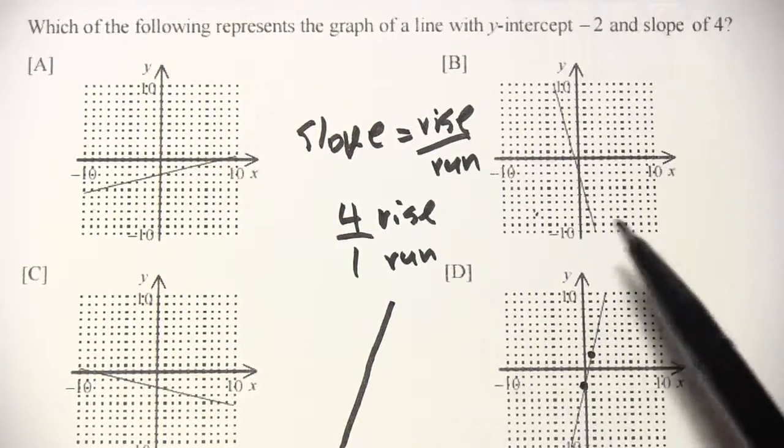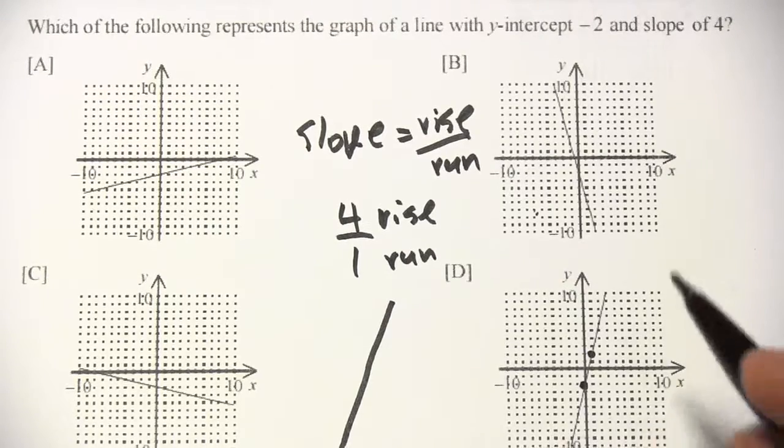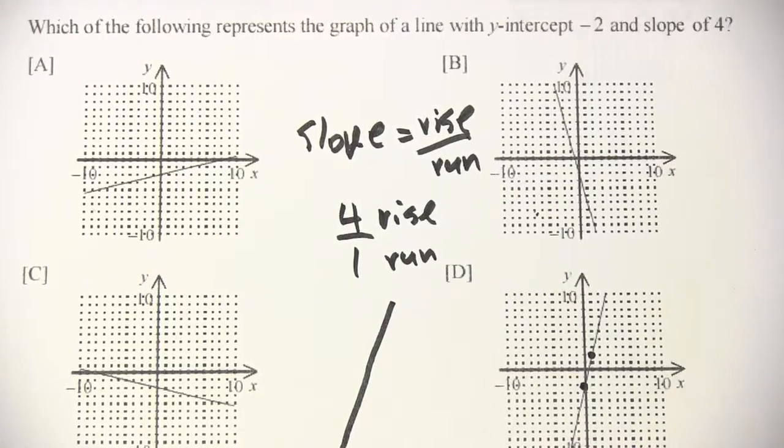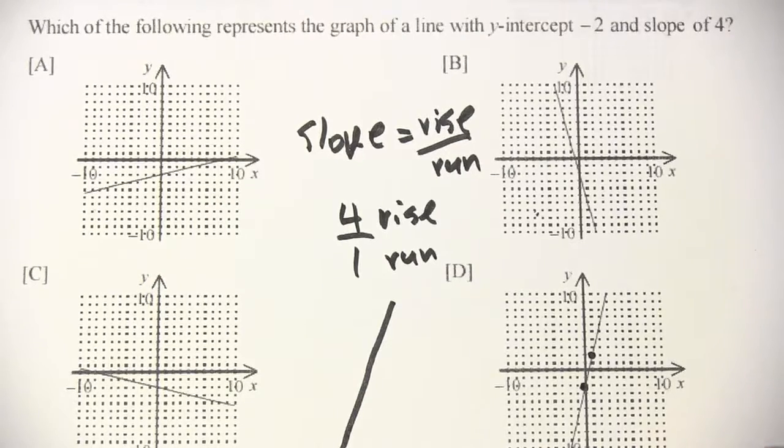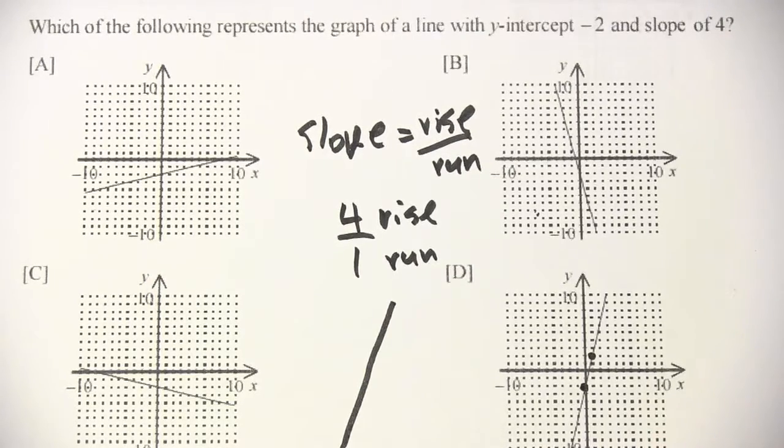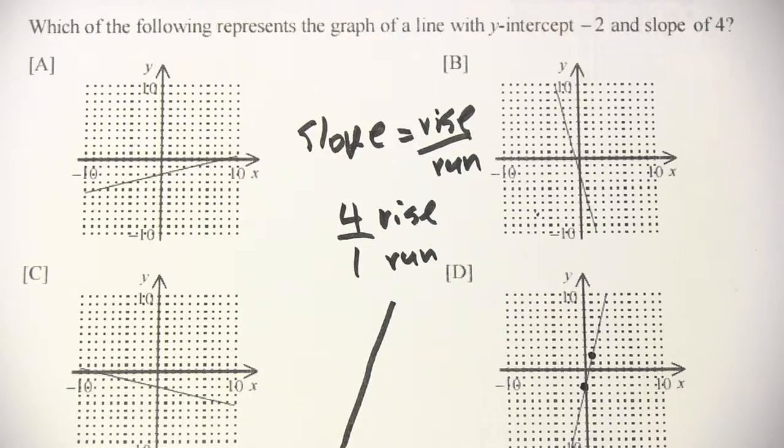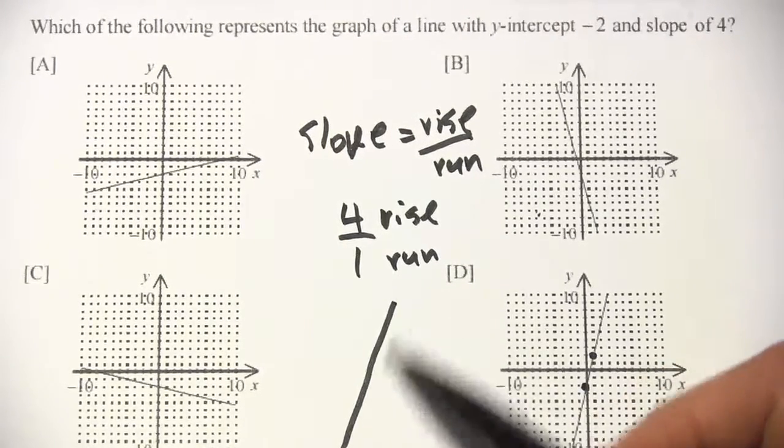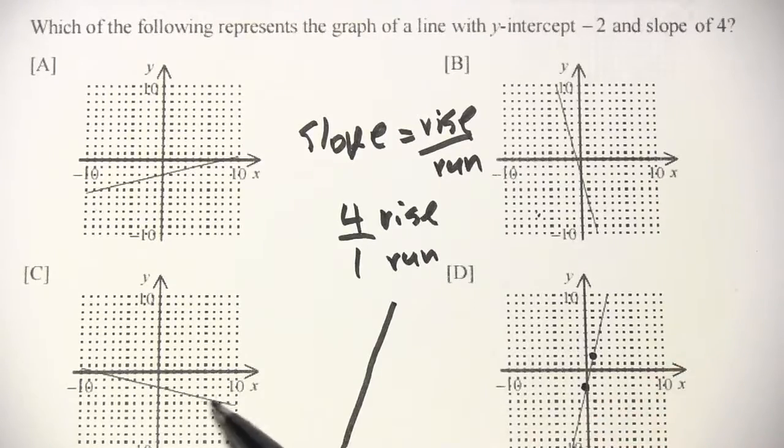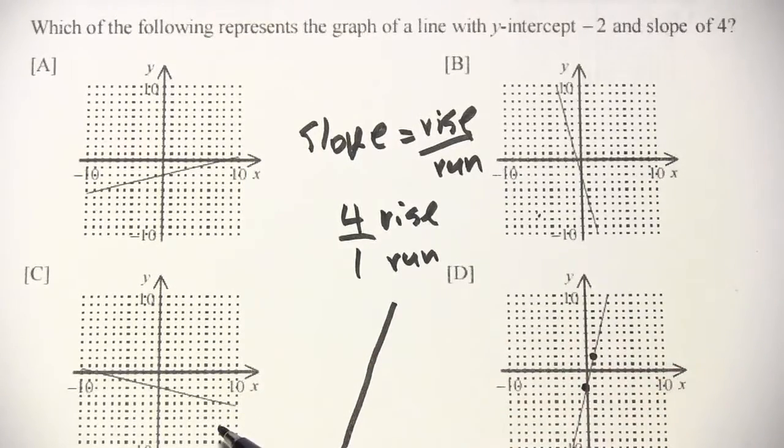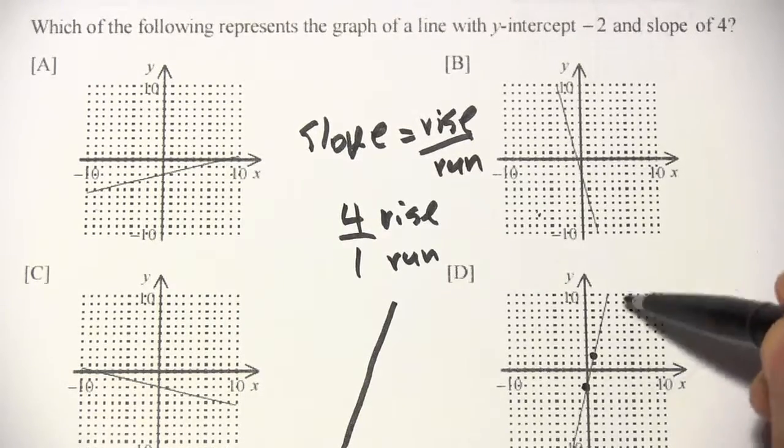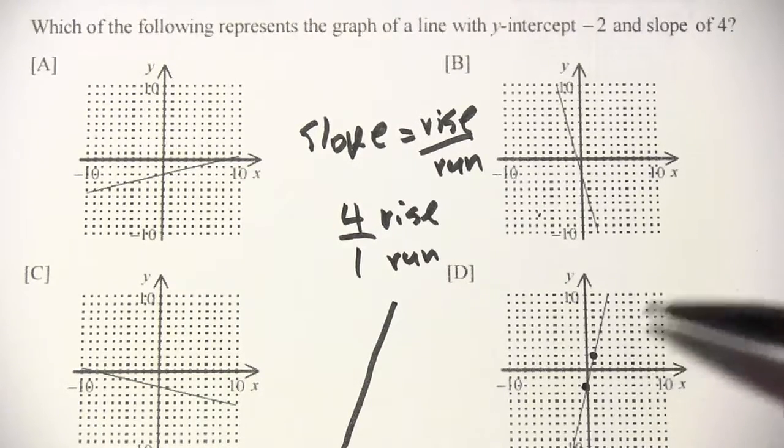One thing to remember about slopes of lines, any positive slope is going to slope up and to the right. Any negative slope is going to slope down to the right. And the bigger the slope is, the steeper it gets. These shallow slopes like this are usually fractions, so one-fourth or one-third or something like that. And steep ones like this are usually bigger numbers, bigger than 1.